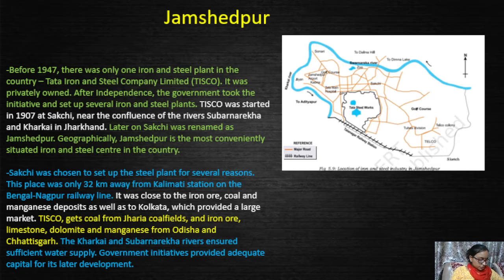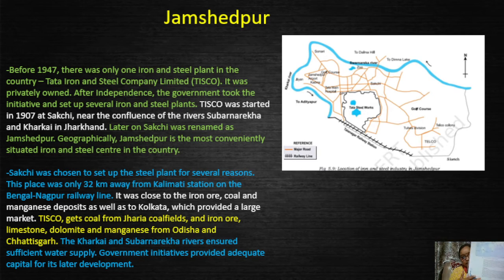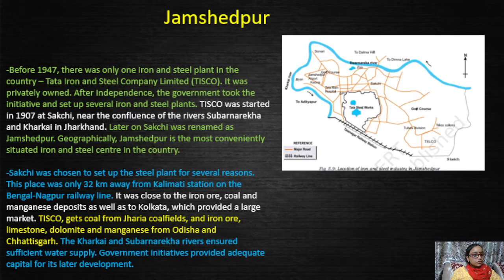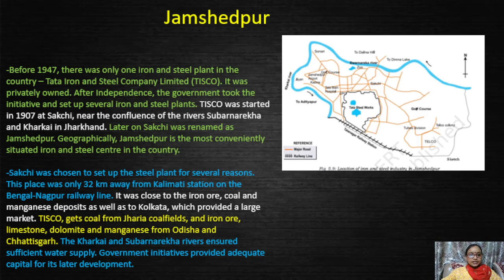In this last class we are going to continue the topic by completing one of the best examples of an area — Jamshedpur. For this topic you have to come to page number 54. We will see which industry is established in Jamshedpur, and it is focused on the steel industry. Before 1947, there was only one iron and steel plant in the country — Tata Iron and Steel Company Limited, which we call TISCO. It was the first iron and steel industry plant in India and it was privately owned.